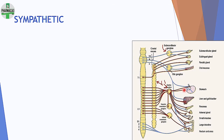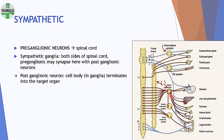Pre-ganglionic neurons leave the spinal cord and come to the sympathetic ganglion. These ganglia are present on both sides of the spinal cord. Here they synapse with the post-ganglionic neurons. 'Post' because anything after the ganglion is post — just like post-lunch, post-dinner.